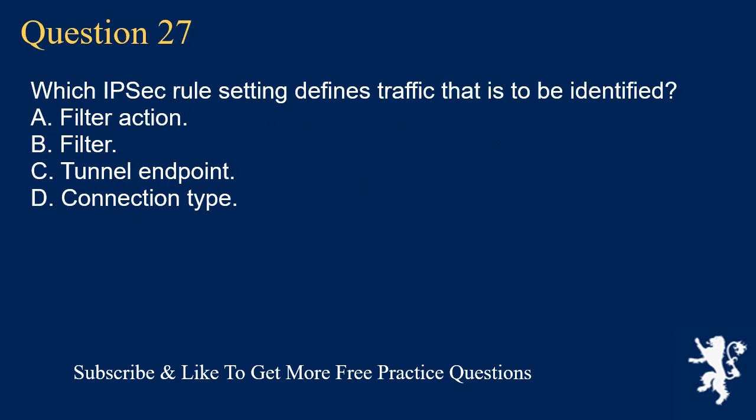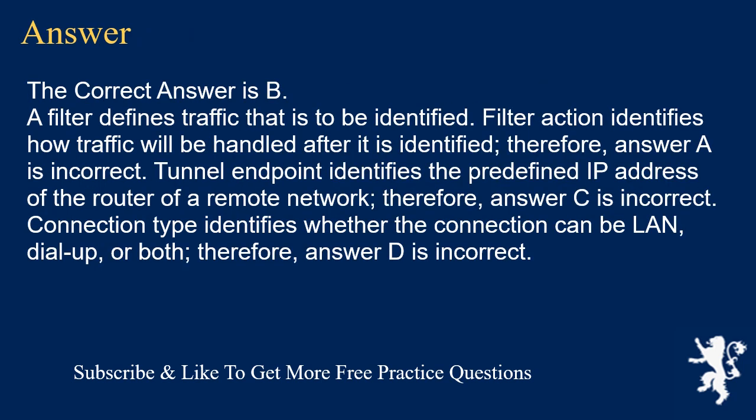Question 27. Which IPsec rule setting defines traffic that is to be identified? A. Filter action. B. Filter. C. Tunnel endpoint. D. Connection type. The correct answer is B. A filter defines traffic that is to be identified. Filter action identifies how traffic will be handled after it is identified. Therefore, answer A is incorrect. Tunnel endpoint identifies the predefined IP address of the router of a remote network. Therefore, answer C is incorrect. Connection type identifies whether the connection can be LAN, dial-up, or both. Therefore, answer D is incorrect.